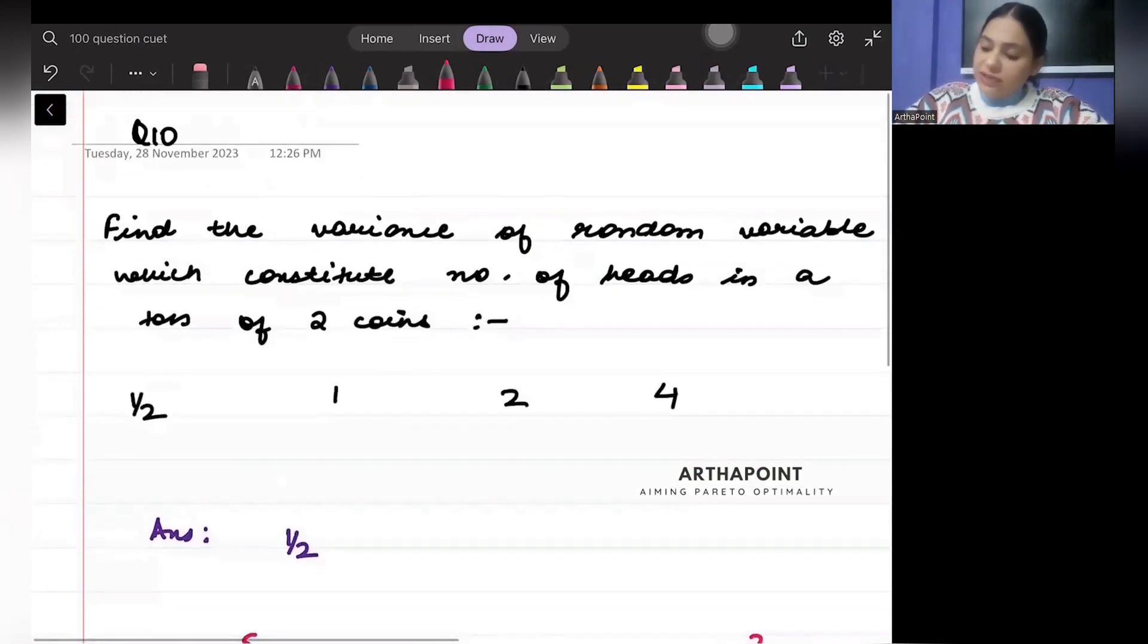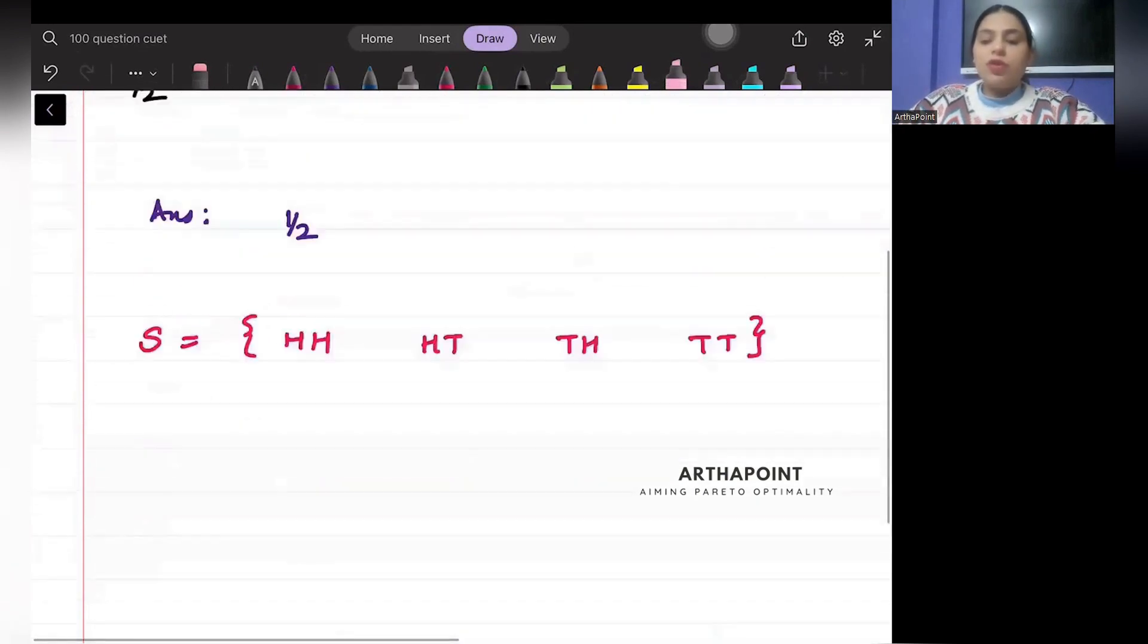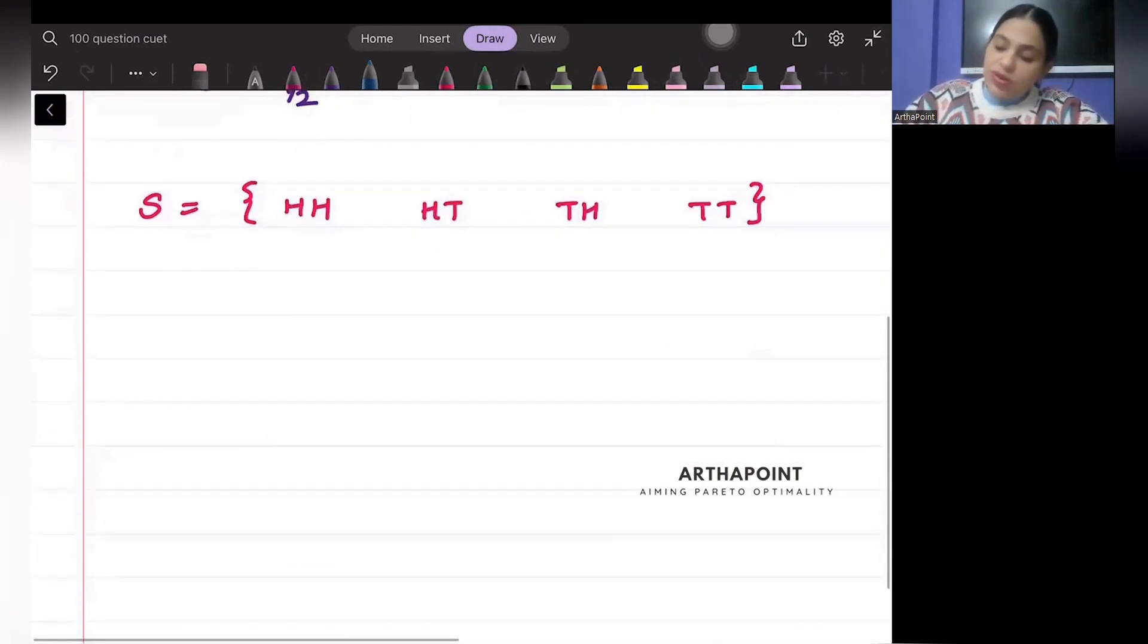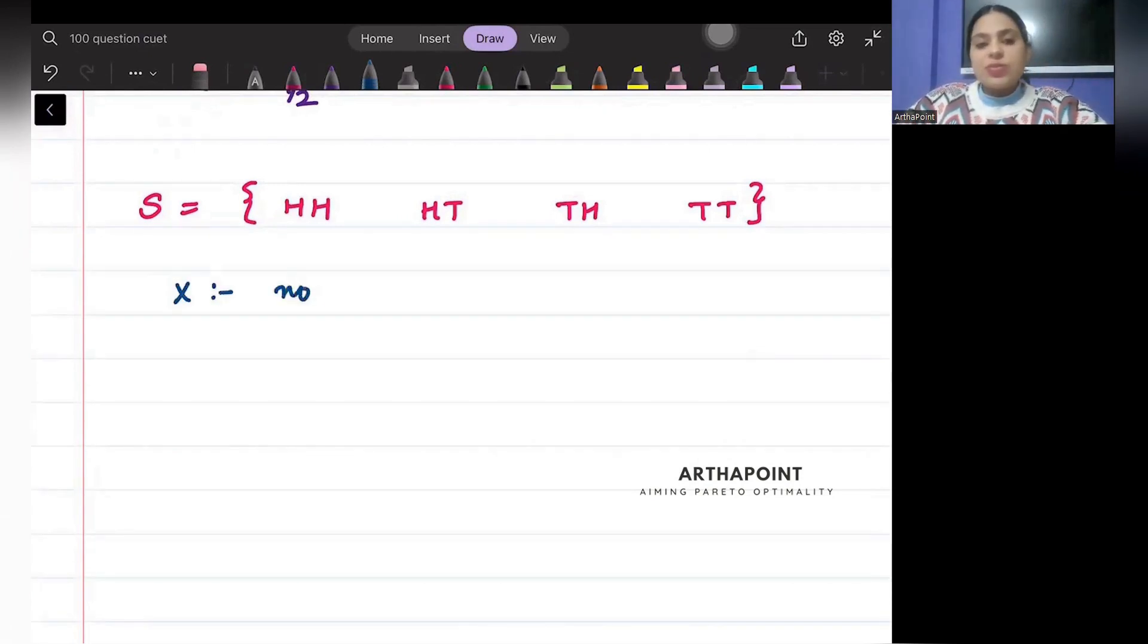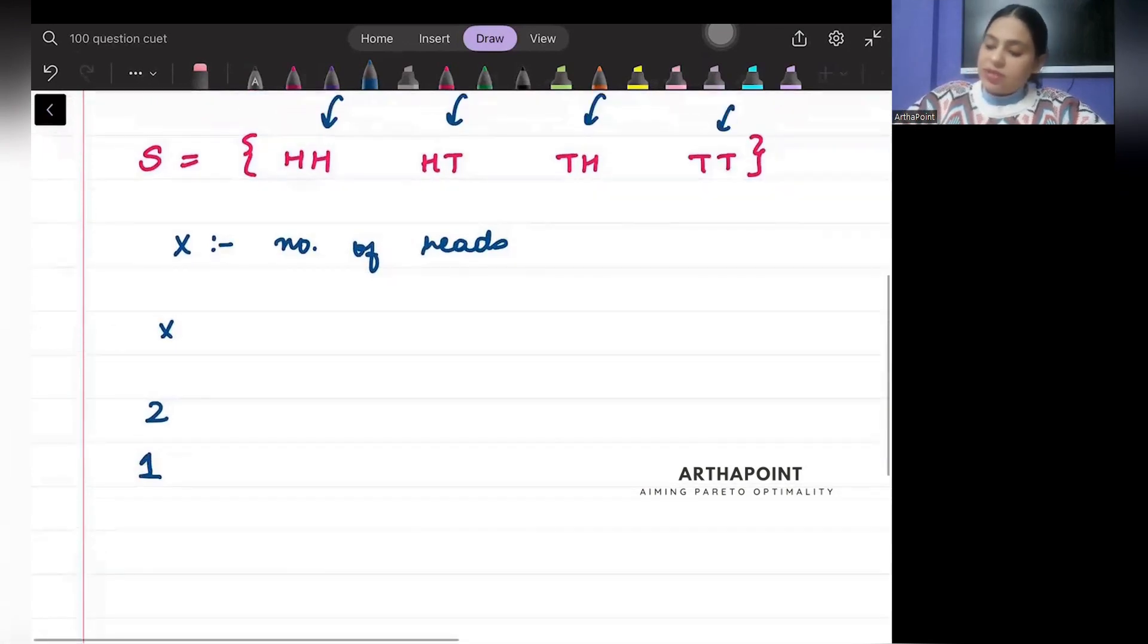Now it says that you have a random variable and the random variable tells you the number of heads. So we can create a random variable x, and this x will represent the number of heads. The number of heads can be two, the number of heads can be one, or the number of heads can be zero.